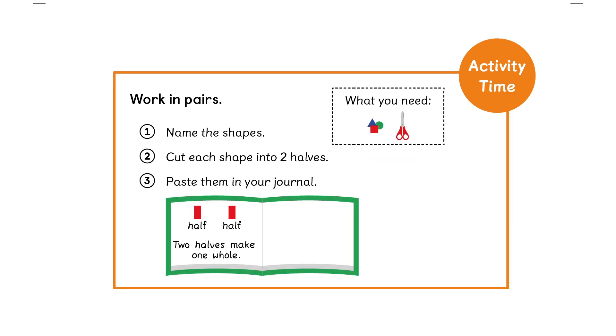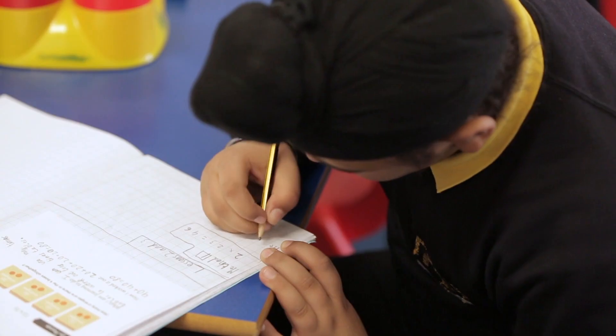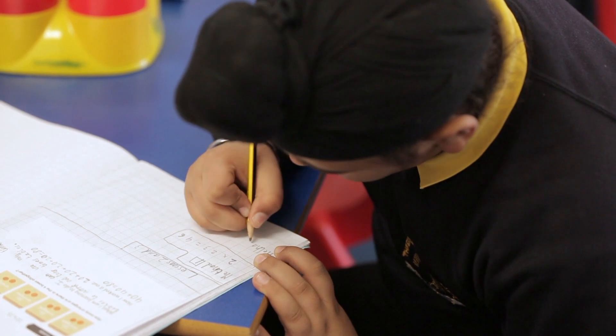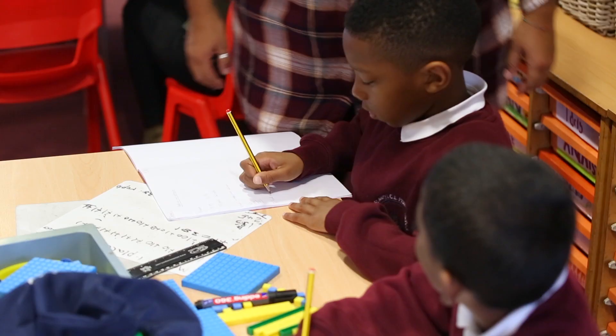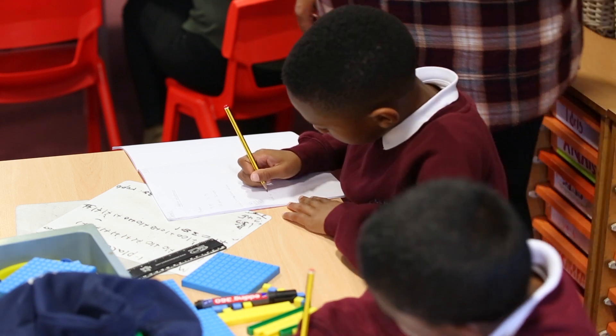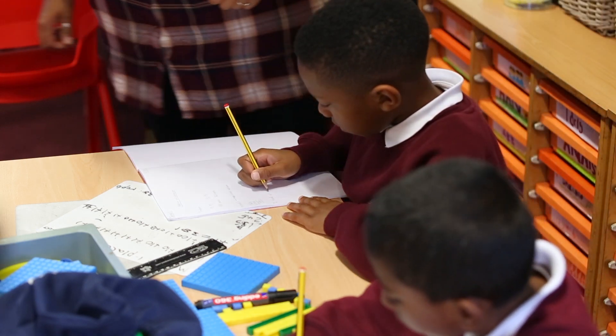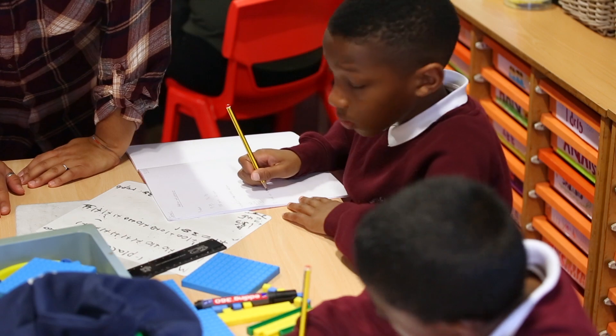So I can imagine the students folding the paper, pasting whatever they have made in their journal, and perhaps even try to write the word half in the journal. That is an example of journal writing that focuses on describing what we do. Sometimes we call that descriptive journal.